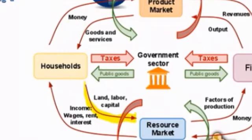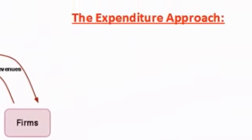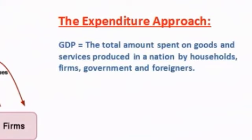In exchange for the provision of these productive resources, households receive income in the form of wages, interest, and rent. But before we get into the income approach, let's define the other way that GDP can be measured. Another way to measure gross domestic product is by finding the total amount spent on the goods and services produced in a nation by households, firms, the government, and foreigners. This is known as the expenditure approach.